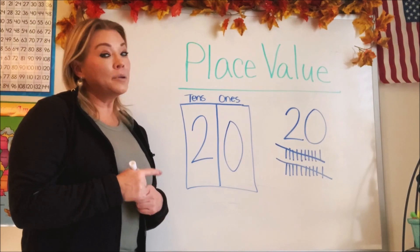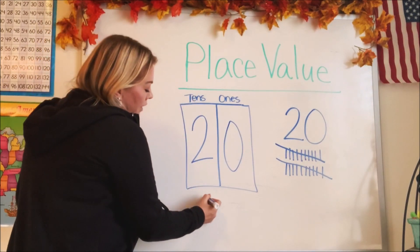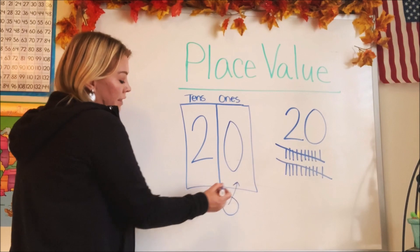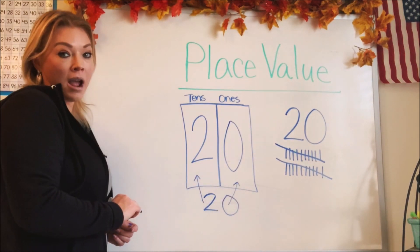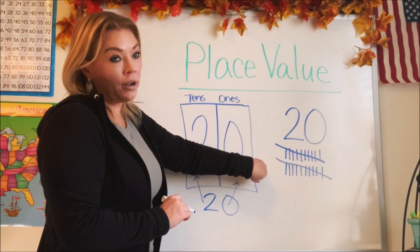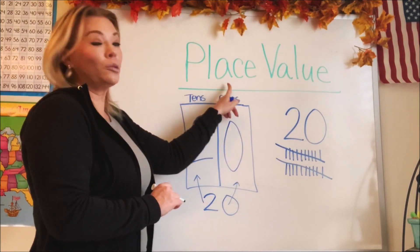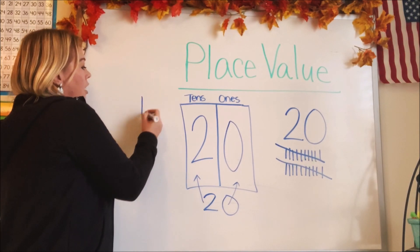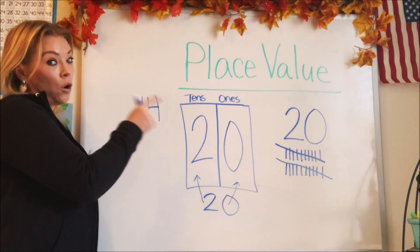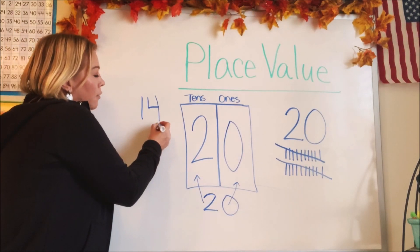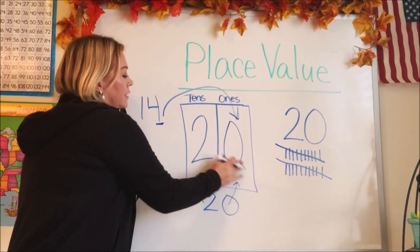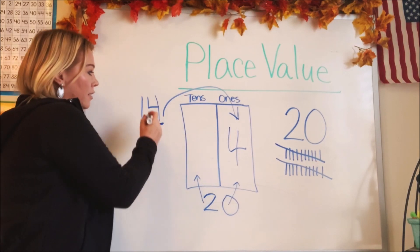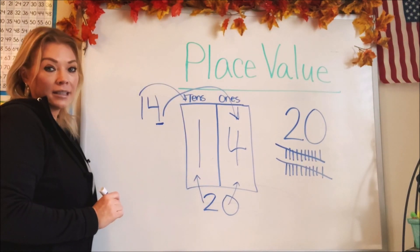You could also just write the number and be able to tell: the last number is the ones and the second number is the tens. So if you don't want to draw it out, if you can look at the number and see which digit goes in which place value, you can just write them directly in. Let's try that real quick. What if we had the number 14? Do you know which one would go where? The last number would be the ones, so that would be four. Let's put a four in here. And how many tens would there be? The next number would be the tens.